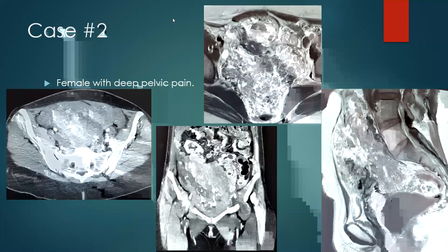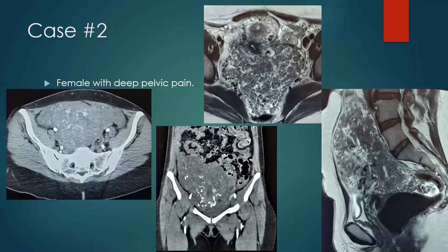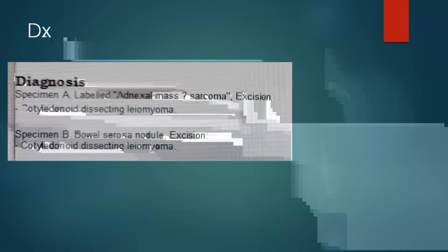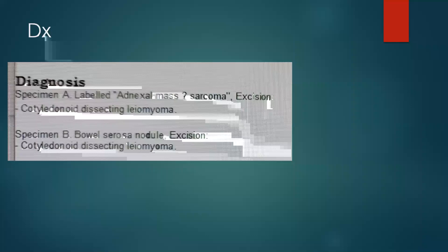Most of the participants chose leiomyosarcoma, representing about 61%, followed by leiomyoma and ovarian fibroma. This lesion was resected and the pathology revealed cotyledenoid dissecting leiomyoma.